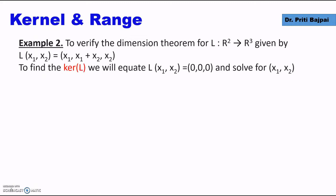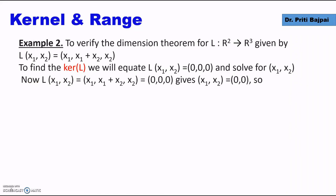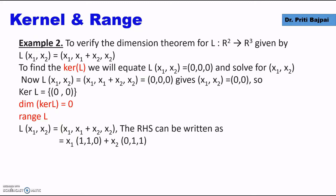Here we are given a mapping from R² to R³. For this linear transformation, the rule is L(x₁, x₂) = (x₁, x₁ + x₂, x₂). We'll first find the kernel L, which means we equate L(x₁, x₂) to (0, 0, 0), where (0, 0, 0) is the zero vector of R³. We solve and find x₁ = x₂ = 0, which means the kernel has only the zero vector. Hence the dimension of kernel is 0.